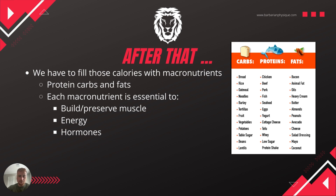Protein helps with building muscle, carbs are mainly used as your energy source, and fats are also used for energy but are really important for keeping your hormones healthy — testosterone, libido, sex drive, estrogen. All these hormones are super important, and by incorporating healthy fats into your diet you'll keep them at healthy levels.